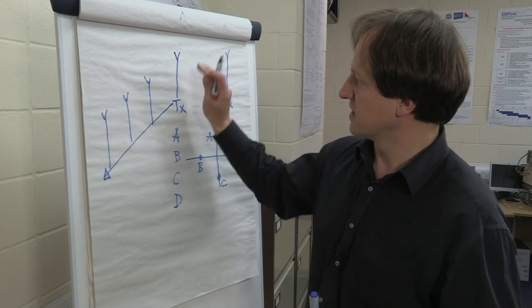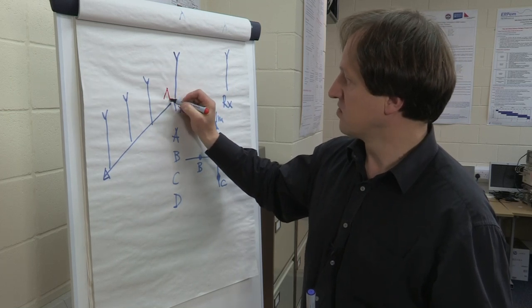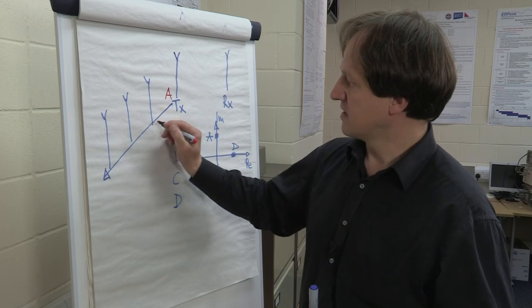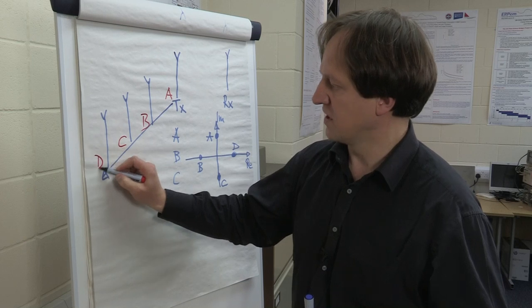And we say that, for example, that position here, that first antenna is linked to, again, the same symbol A, the second antenna to symbol B, the third C, and the fourth antenna to symbol D.